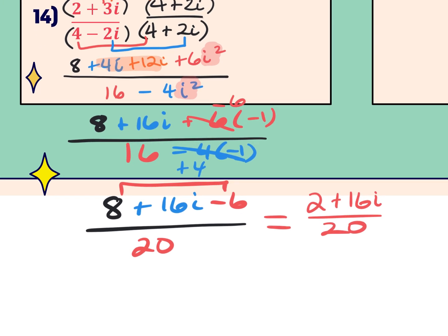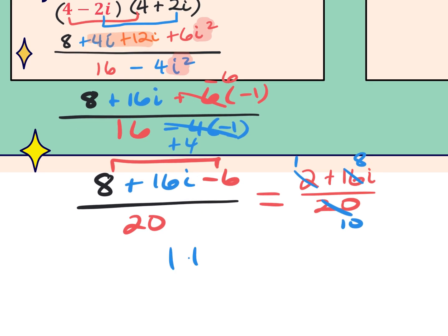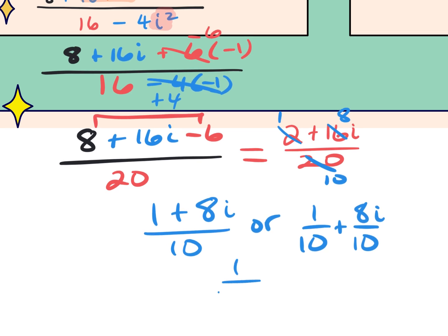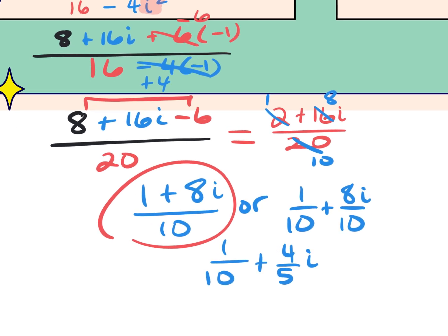Now I can simplify by dividing all terms by 2. This becomes 1 — don't forget about that 1 — then 8i over 10. So the final answer is 1 plus 8i over 10. You could also pull it apart: one tenth plus, and then simplify 8 over 10 to get 4 fifths i, making it one tenth plus four fifths i. Any one of these would be acceptable. When you're doing the homework, read how WebAssign wants you to enter it.